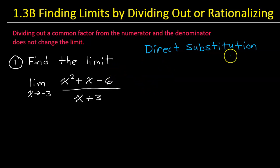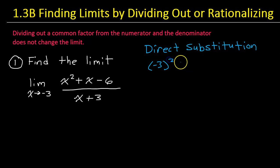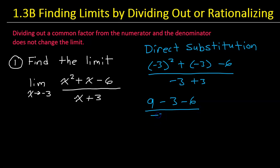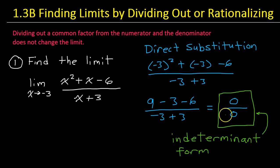Let's start by seeing why direct substitution will not help us find this limit. For direct substitution, we take negative 3 and substitute it for all the x's. That gives us negative 3 squared plus negative 3 minus 6, divided by negative 3 plus 3. We can already see the denominator is going to be 0, which would be undefined. The numerator gives us 9 minus 3 minus 6, so the numerator is also 0. We get 0 divided by 0, which is called the indeterminate form, because on its own it tells us nothing about the limit of the original function.